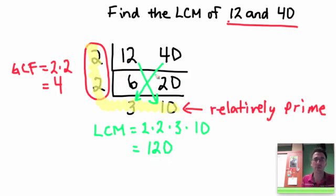And that is how we can use double division to find the LCM, as well as the GCF, of two different numbers.